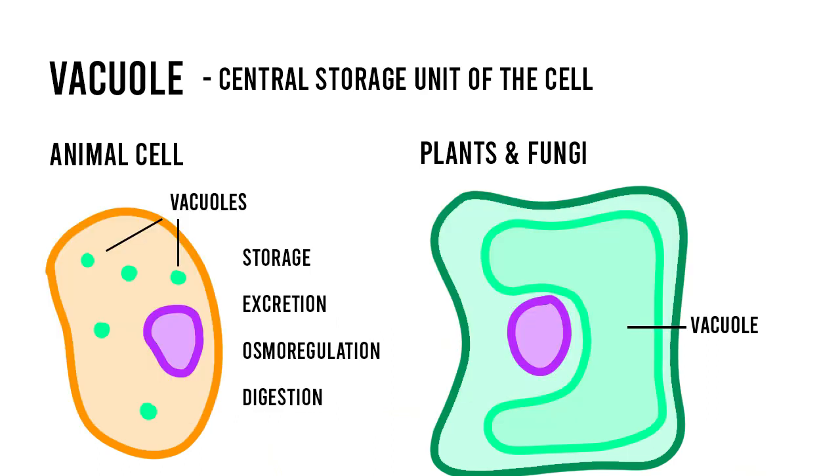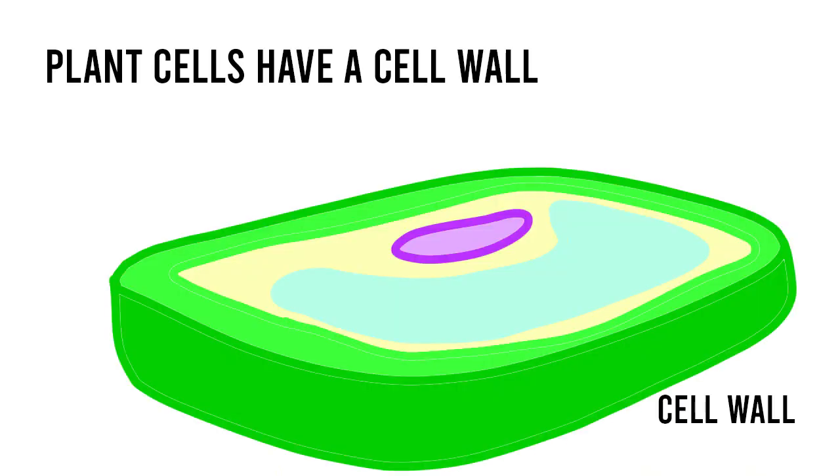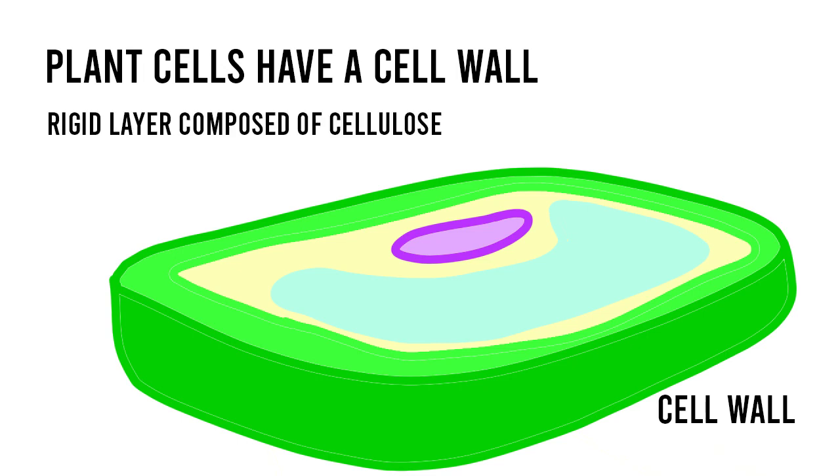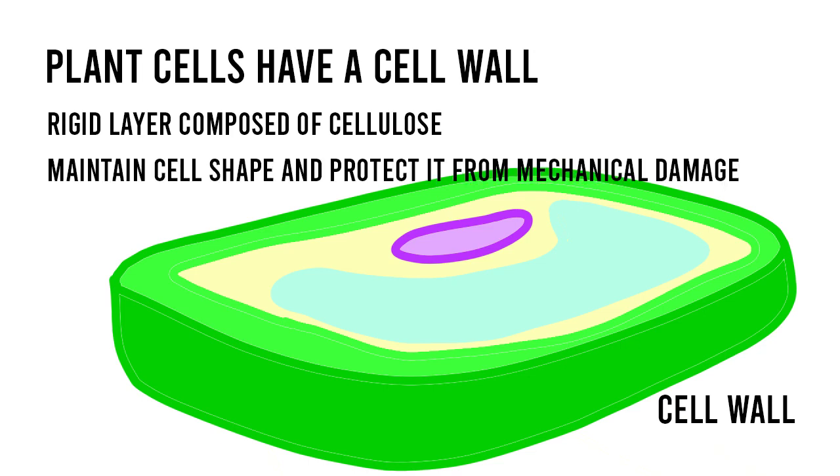Specifically in plants, the central vacuole is responsible for holding material and waste, but it also exerts what we call turgor pressure on the walls of the cell to maintain its shape and structure. Finally, plant cells have a cell wall, which is a rigid layer composed of cellulose and other polysaccharides. It is the outermost layer of a plant cell and is used to maintain the cell shape and protect it from mechanical damage.